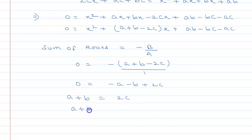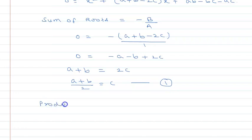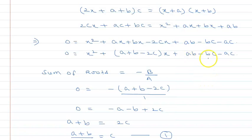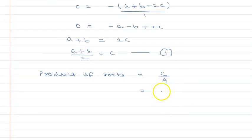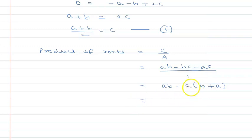Therefore c = (a+b)/2. Let's call this equation 1. Now I need the product of roots. Product of roots = c/a (constant term divided by coefficient of x²). The constant term is ab - bc - ac, so product of roots = (ab - bc - ac) / 1 = ab - c(b + a).